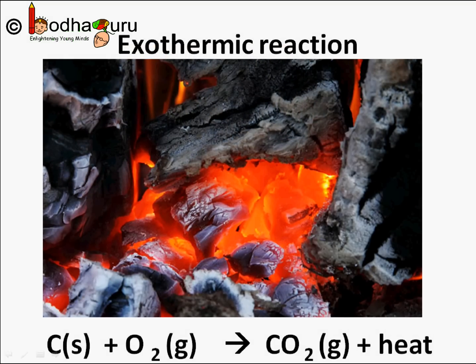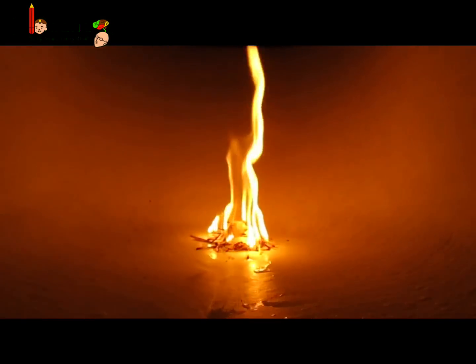What happens when we burn coal? Lots of heat is produced. Carbon plus oxygen gives carbon dioxide plus lots of heat — C plus O2 gives CO2 plus heat. This kind of reaction in which heat is released along with the formation of products is known as an exothermic reaction. So combustion of any flammable substance is an exothermic reaction as it produces heat.